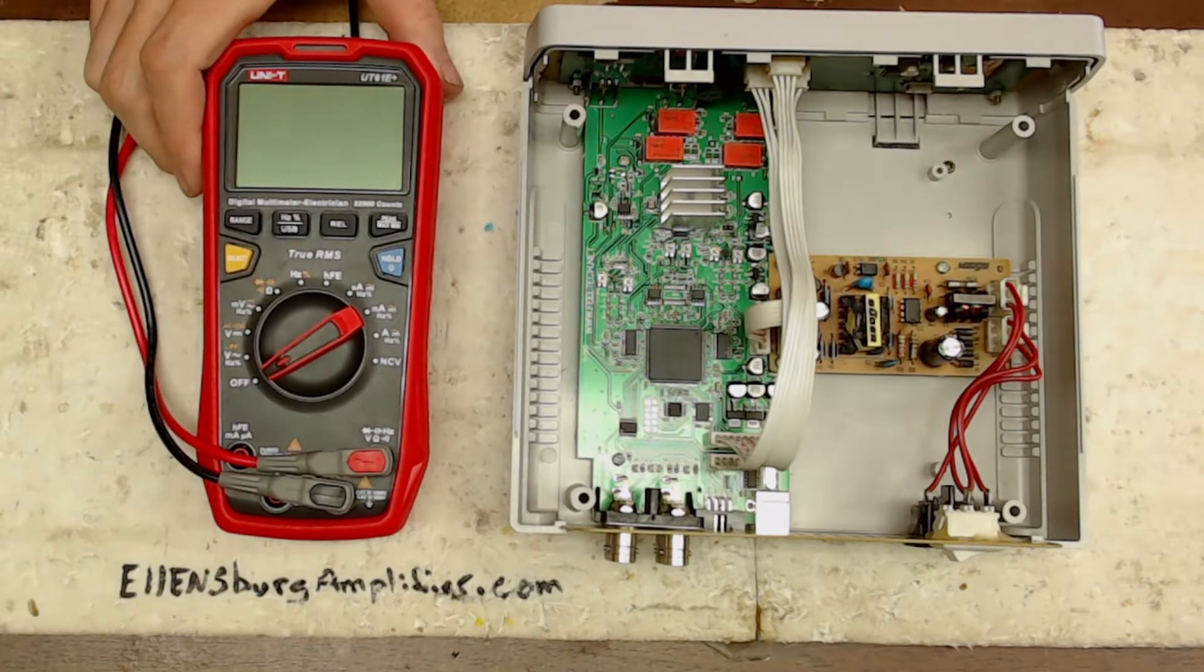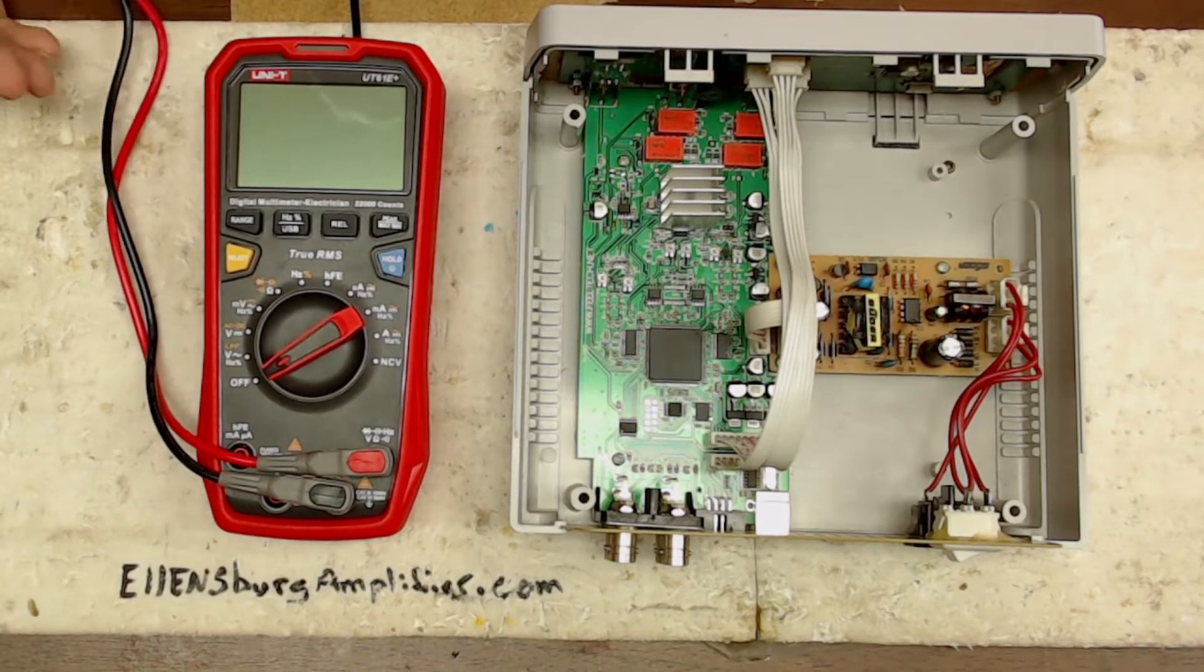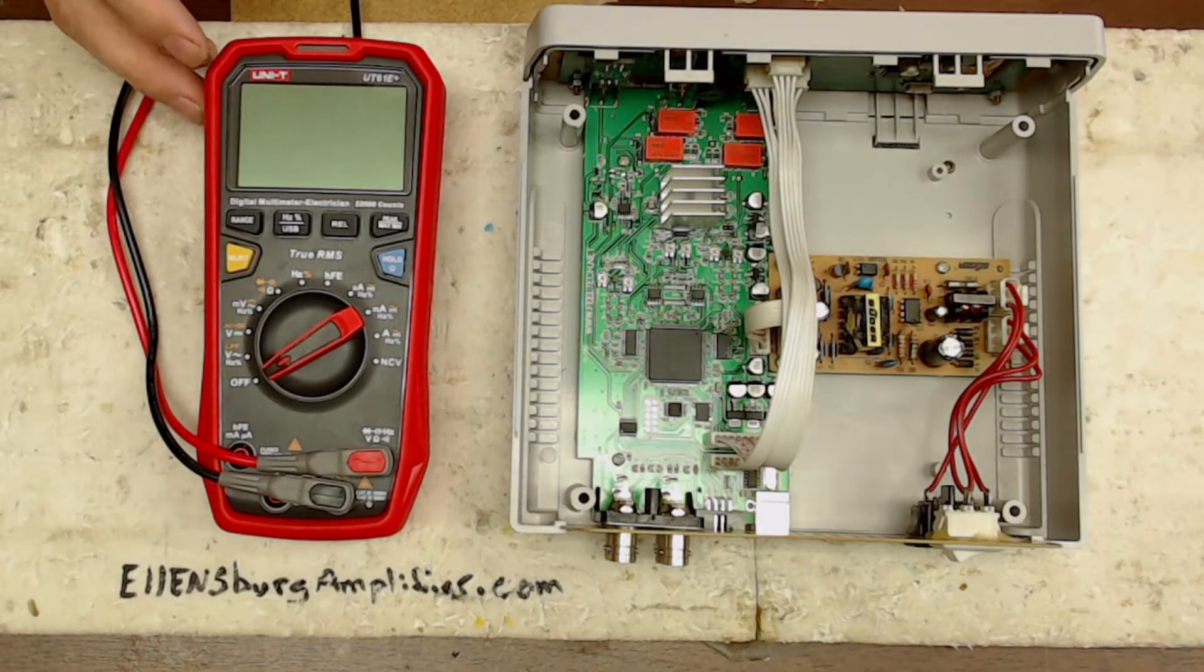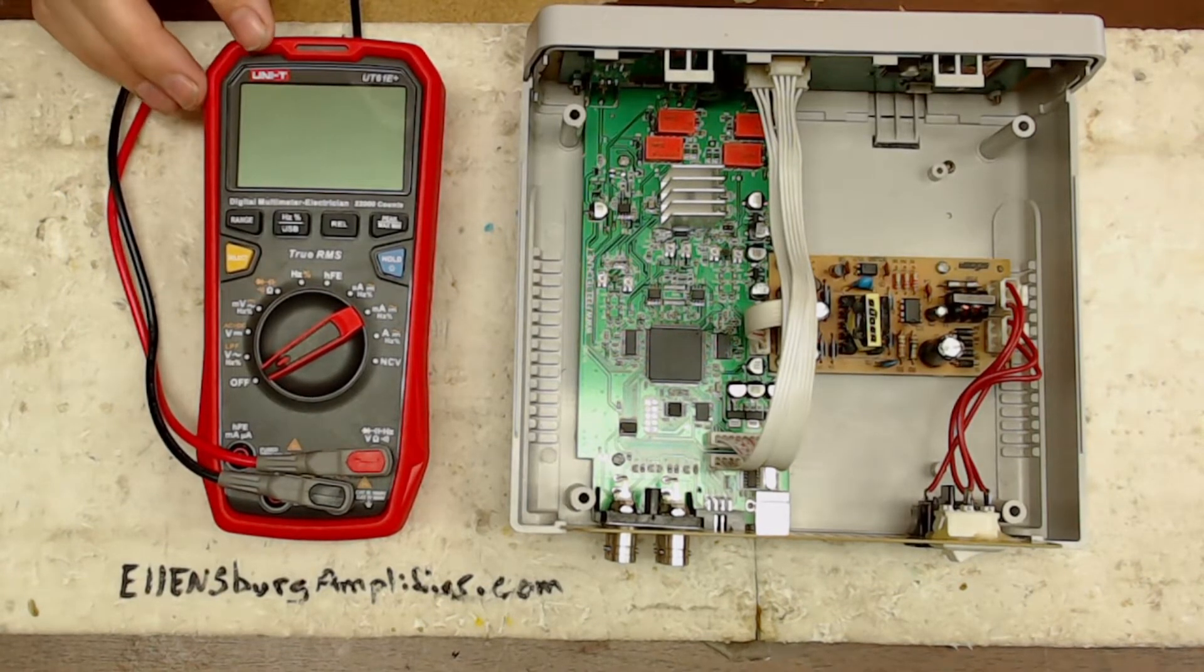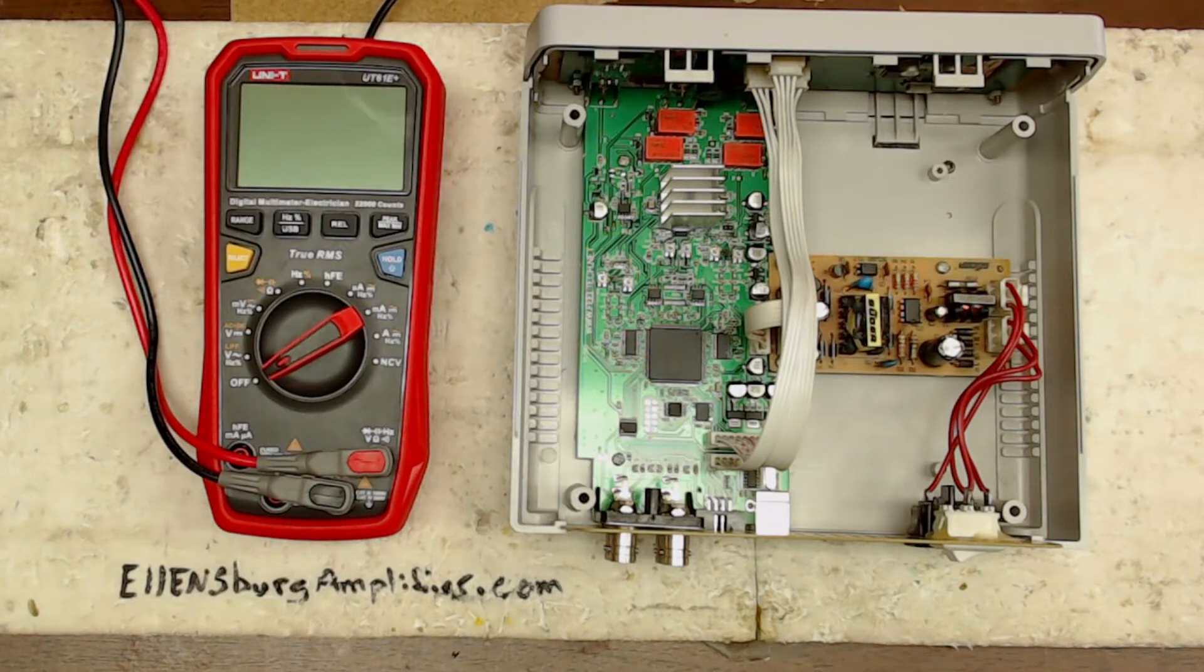As you can see here I have a new UNI-T UT-61E meter here in addition to my Fluke 87. I did a video on this for you guys but ran into a little problem so I probably won't be putting that video out. So I am making a new video about this. My goal was to be able to connect the meter to the computer to show you guys how I use resistance to locate faulty components and amplifiers.